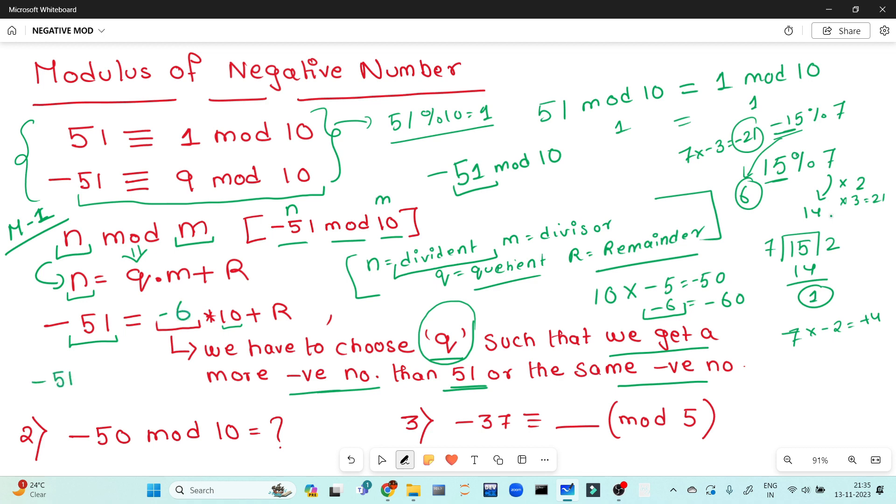Now, minus 51 equals minus 60 plus r. So r equals 60 minus 51, which gives us 9. Therefore, the answer is 9.